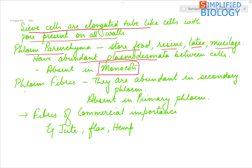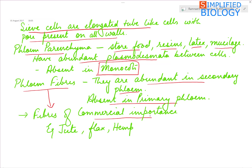And last, the phloem fibers. Phloem fibers are the sclerenchyma fibers associated with phloem. They are abundant in secondary phloem but are absent in primary phloem. Phloem fibers are of commercial importance, like jute, flax, and hemp.